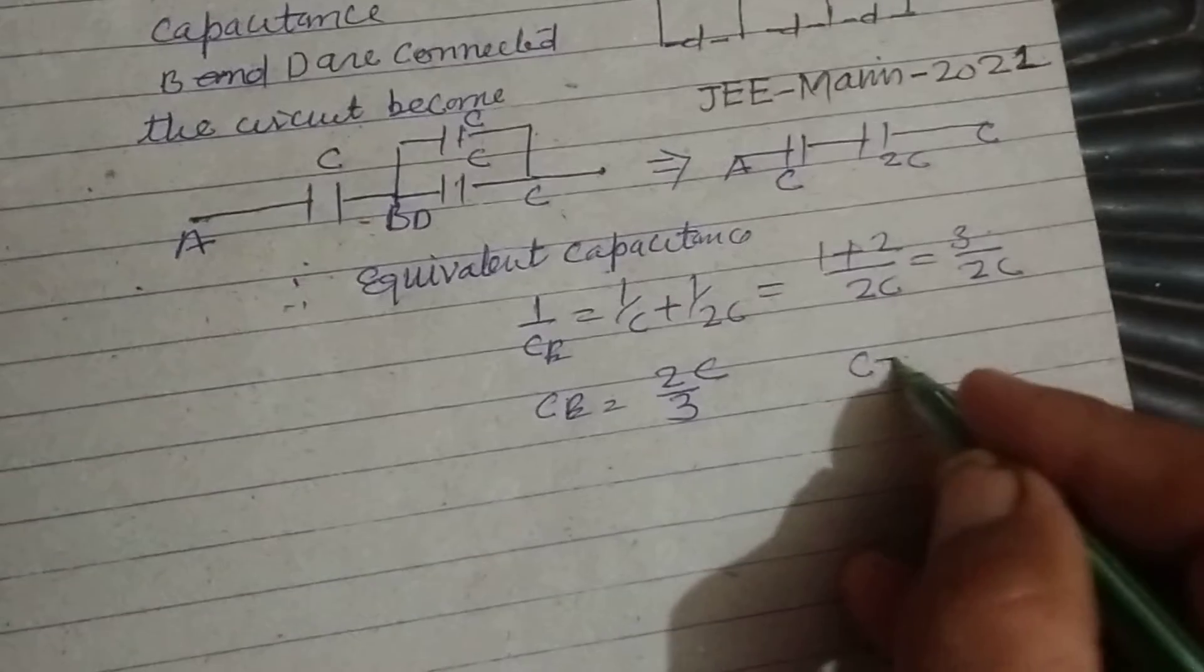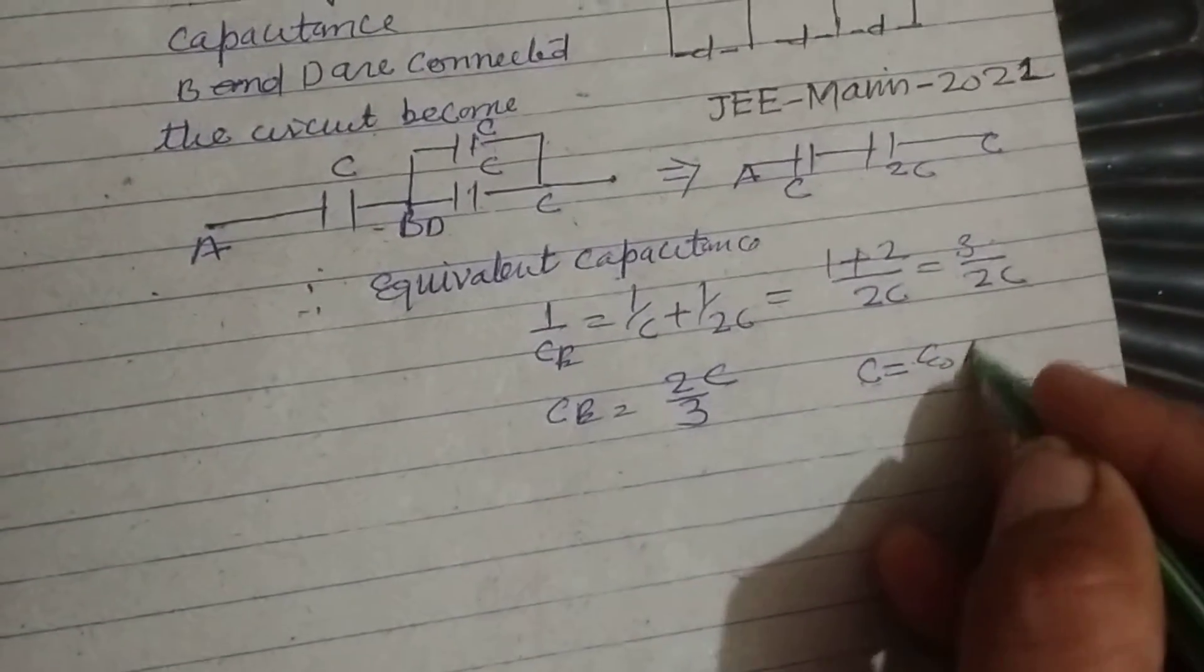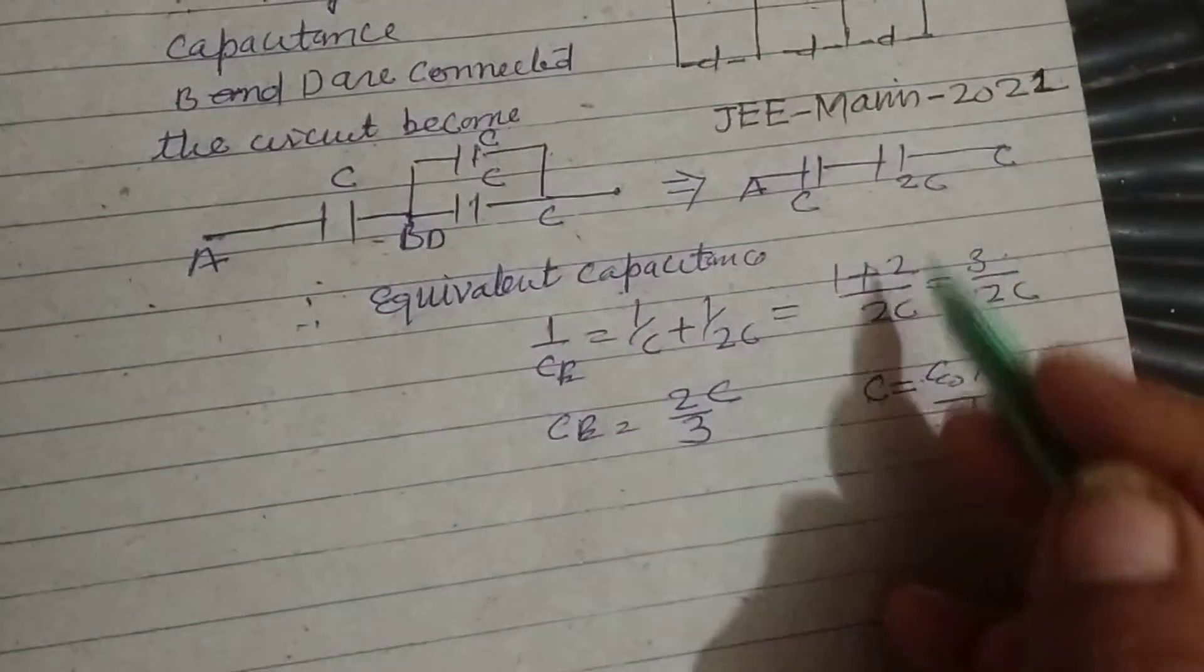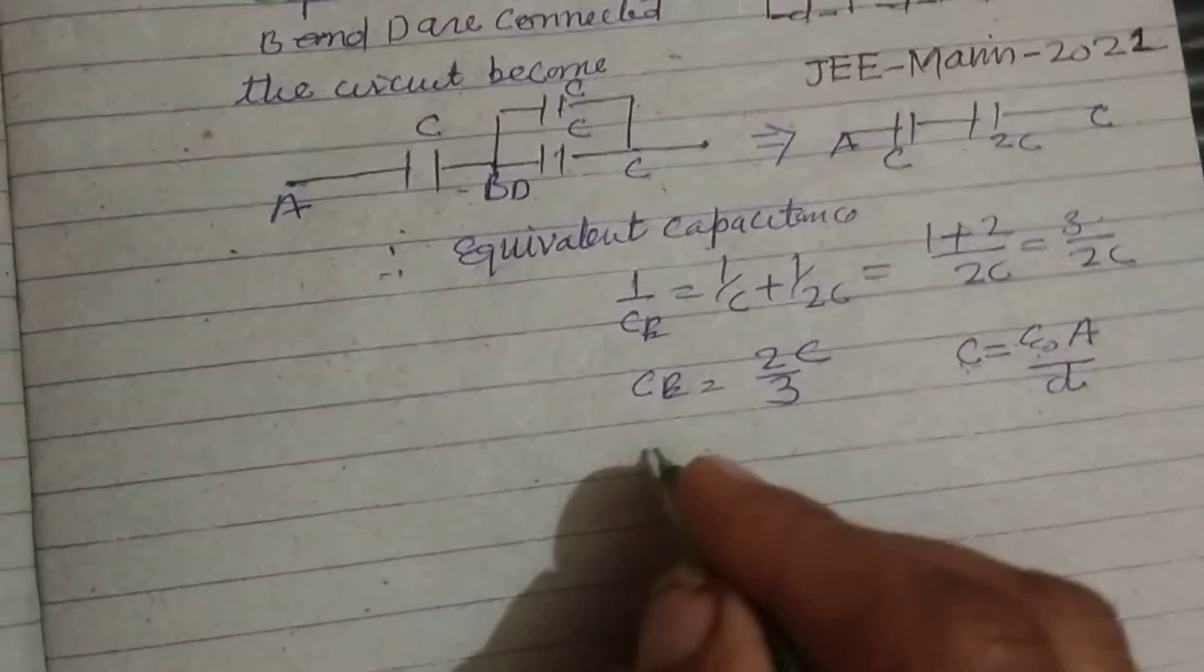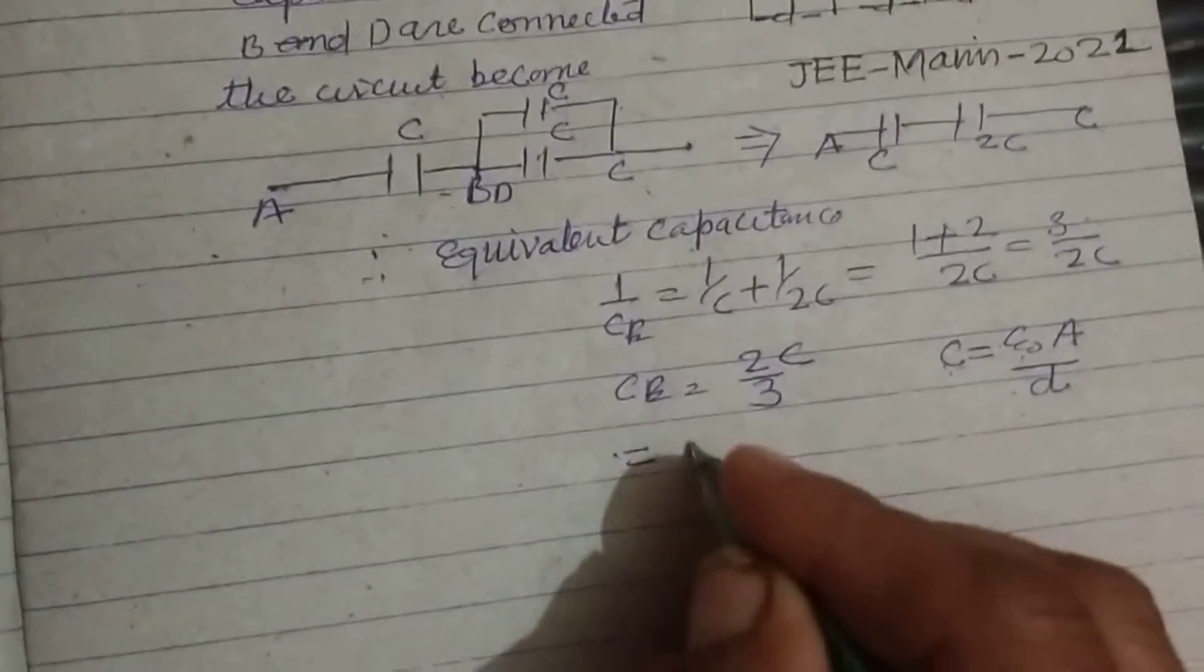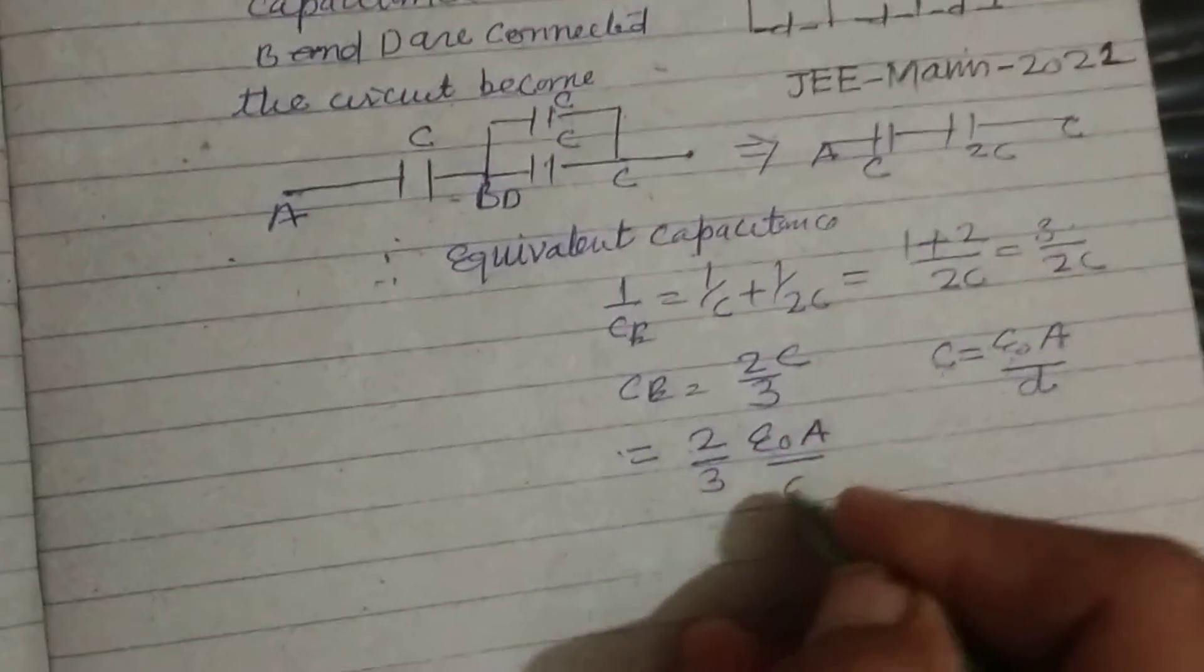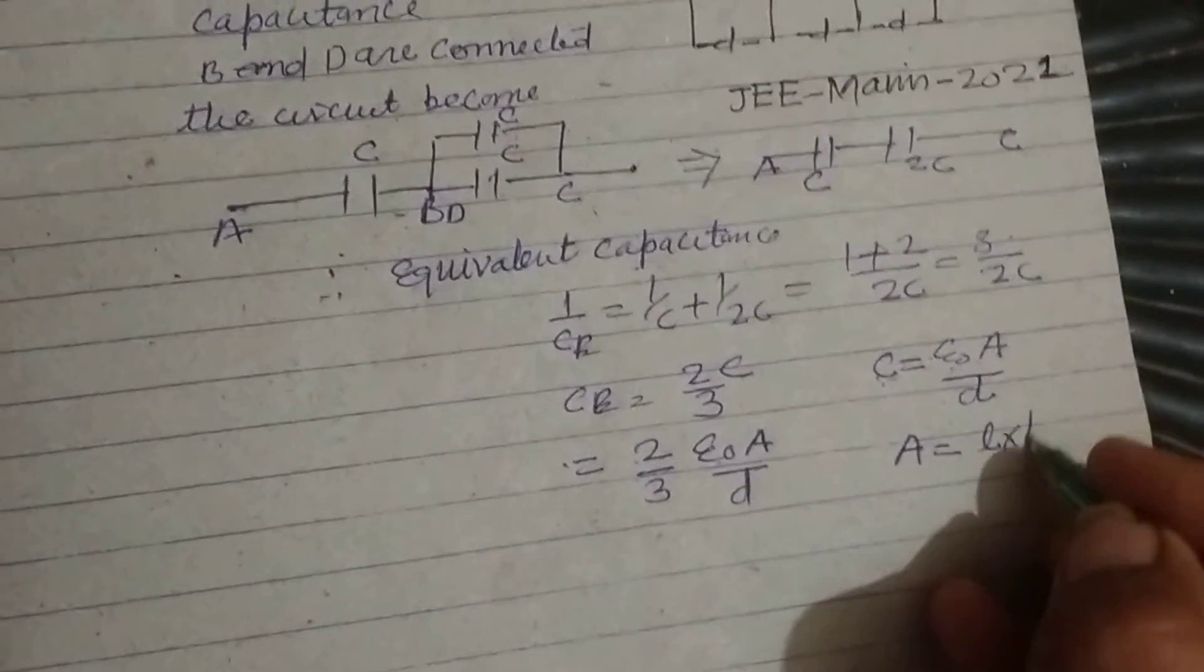And C for parallel plate capacitance is C equal to epsilon not A upon d when no dielectric substance is filled inside these plates. A is the area of the plates. So this is length into breadth.